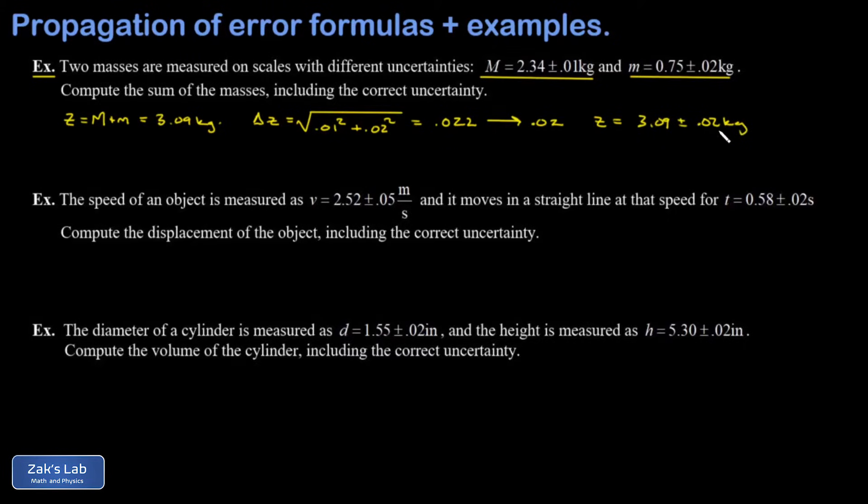And just as a double check, the significant digit in the uncertainty should be the same place value as the last stated place value in the quantity itself.